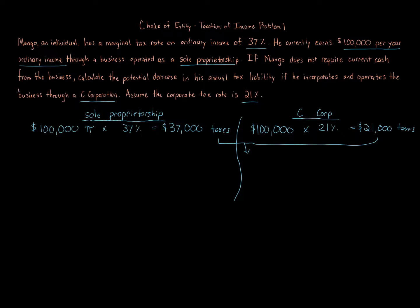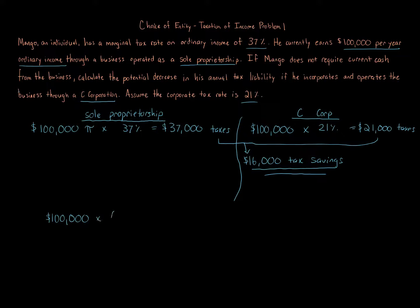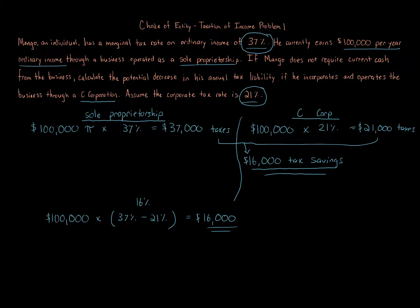Rates could change in the future, and there are other issues to consider with a C corporation, including double taxation — that second level of taxation is a huge issue. Another way to calculate this: simply take the one hundred thousand dollar amount and multiply it by the difference in rates — 37 percent minus 21 percent equals 16 percent. One hundred thousand times 16 percent gives you 16 thousand dollars. That's an alternative approach to arrive at the same 16 thousand dollar tax savings.